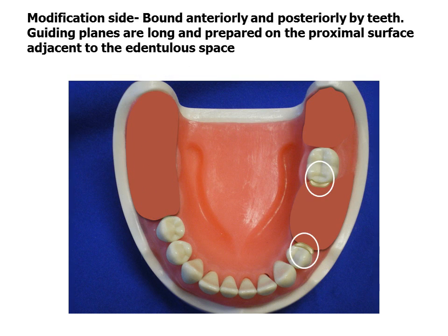On the modification side, guiding planes are long, two-thirds the occlusal gingival height, because the partial does not undergo anterior-posterior rotation to the same degree as the extension base side. The guiding planes are normally prepared on the proximal surface adjacent to the edentulous space. The proximal plate may be adjusted for overextension if desired.